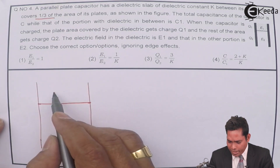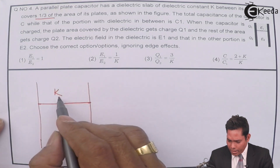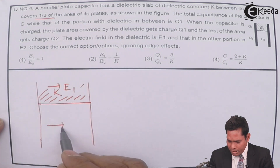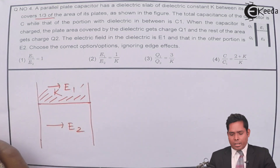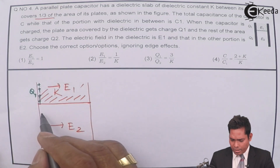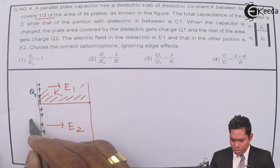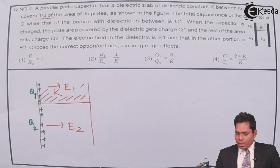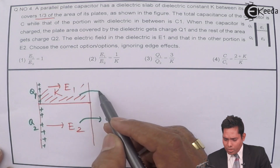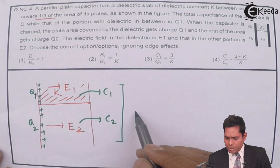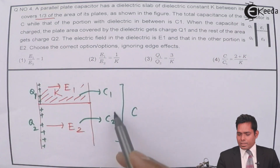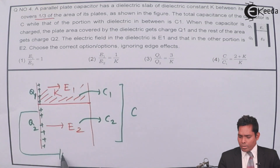This region is filled with dielectric of constant K, and here the electric field is E1. The remaining two-third region has no dielectric, and the electric field there is E2. The charge developed in the dielectric portion is Q1 and in the other portion is Q2. The capacitance of the dielectric portion is C1 and of the other portion is C2. The total capacitance of the combination is C.